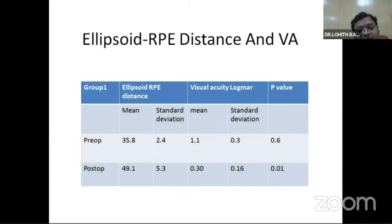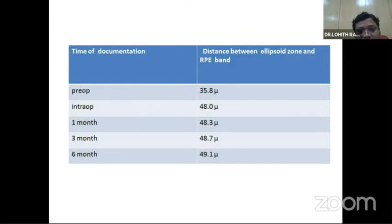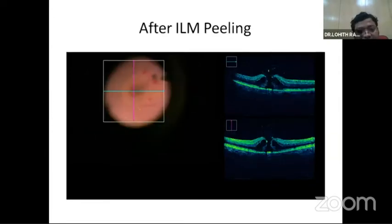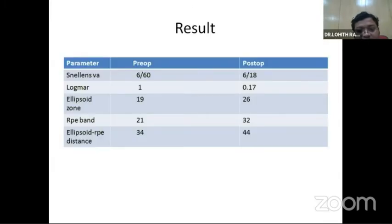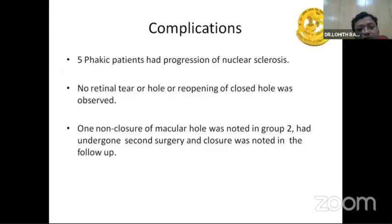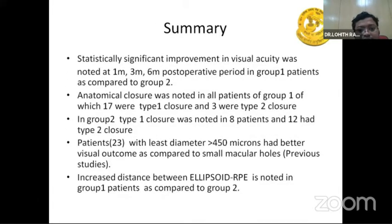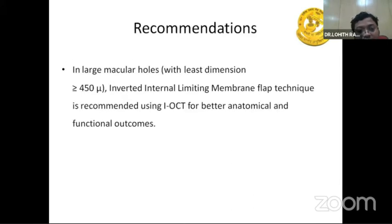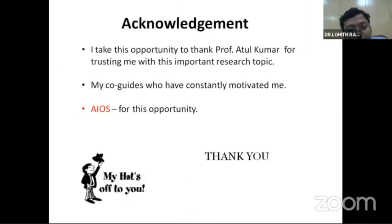The ellipsoid-to-RPE distance pre-op in group 1 was 35.8 microns and post-op was 49.1 microns. After six months, the distance between the ellipsoid zone and RPE band was 49.1 microns. Images show the ILM peeling intraoperative view and post-op images. Five patients had progression of nuclear cataract; no retinal tear was observed. Conclusion: statistically significant improvement was observed at one, three, and six months post-op in group 1 compared to group 2. Using the inverted flap technique with iOCT, larger macular holes with minimum diameter greater than 450 microns showed better anatomical closure. We recommend using iOCT for better anatomical and functional outcomes.